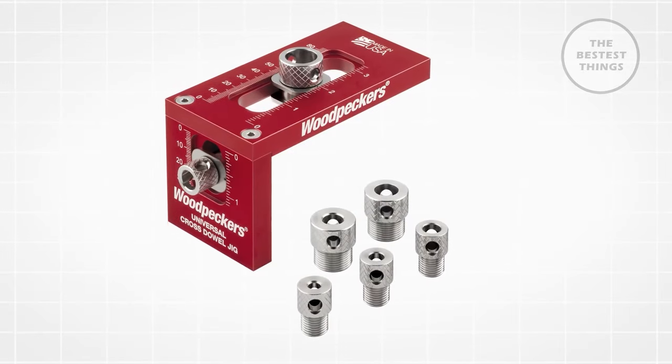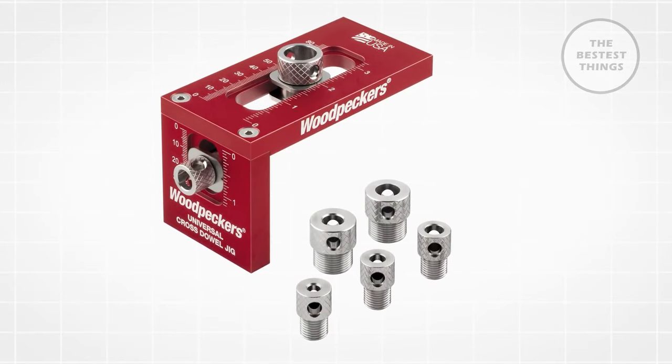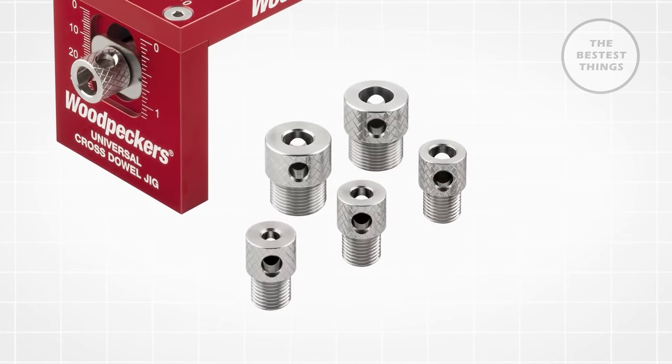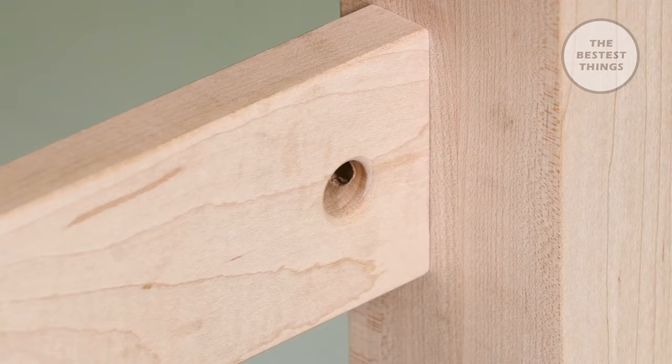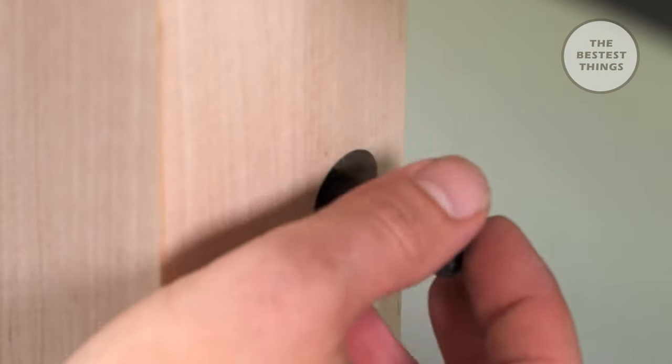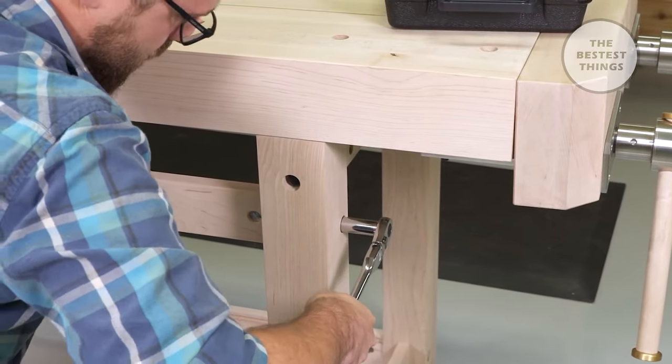The universal cross dowel jig is truly universal, accommodating most cross dowel sizes on the market from tiny 10-24s up to massive 3/8 inch 16 TPI versions made for workbench leg stretchers.